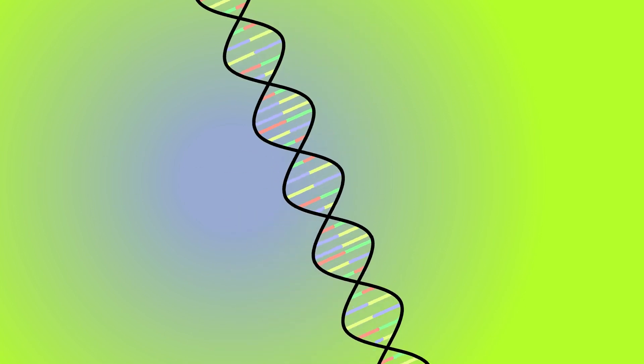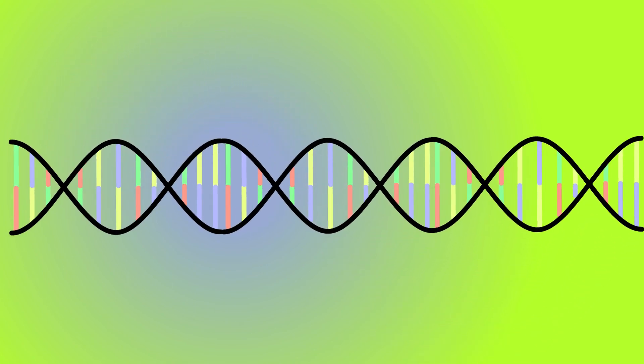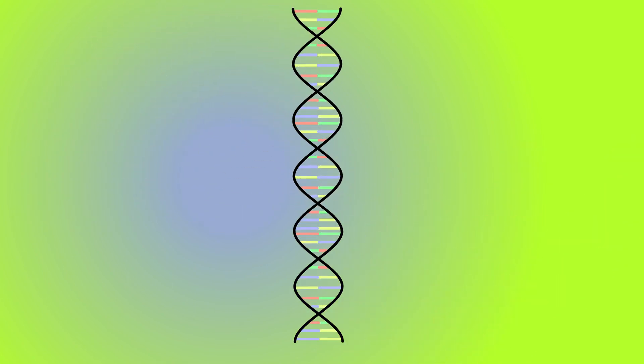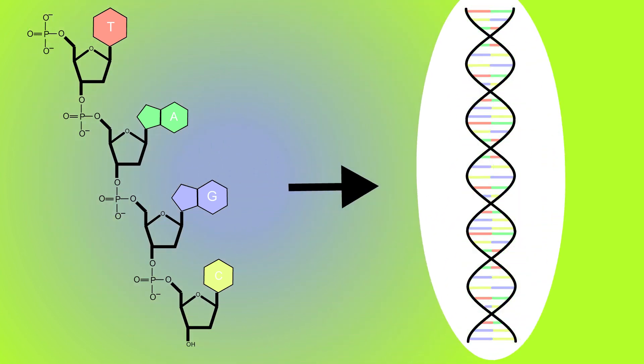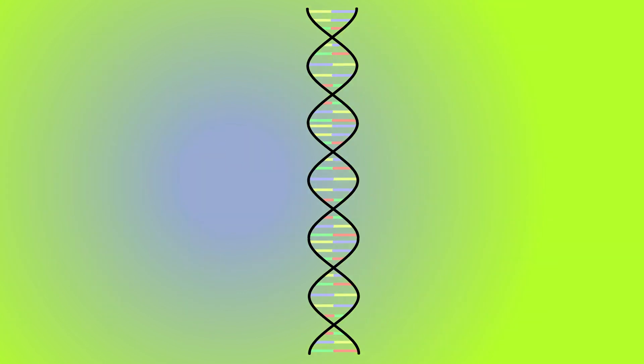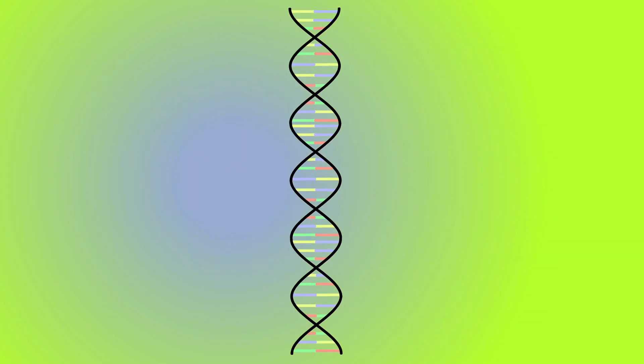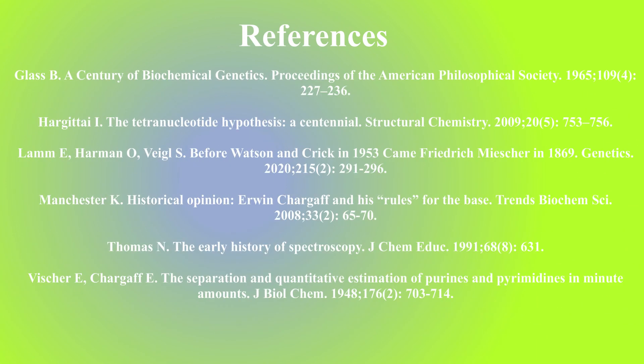Only a year later, the Hershey and Chase experiment finally confirmed that it was DNA that was encoding for genetic information. Within only a few short years, DNA went from this boring string of repetitive bases to this gorgeously complex double helix structure that could encode for life. Once scientists understood DNA better, the next step was to start learning to read it. But that is a story for another time.